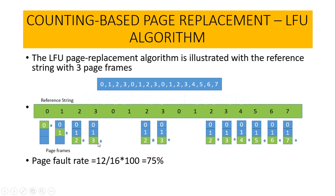Applying the LFU algorithm, we are going to replace the page which has the smallest count. Since page 0 has a count of 3, page 1 has a count of 2, and page 2 has the least count, we replace page 2 with page number 3. Then the request for page number 0 will not result in any kind of page replacement since page 0 is already available in the page frame.